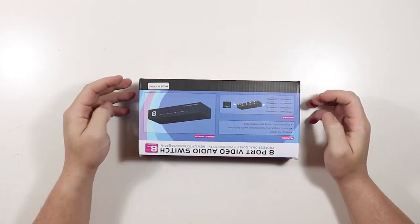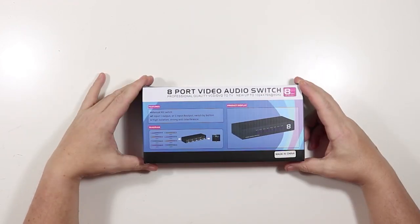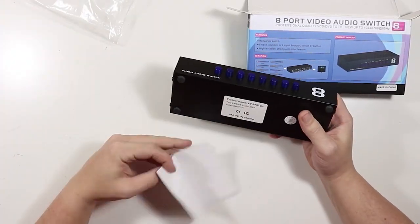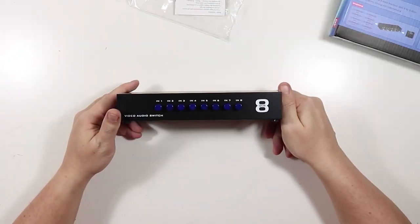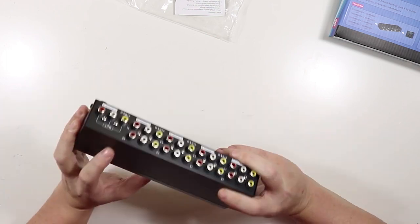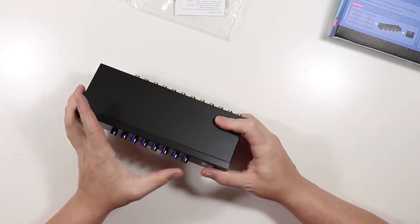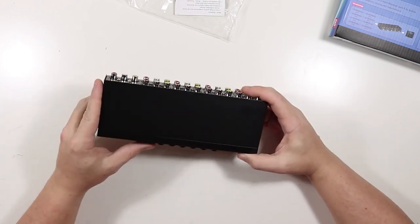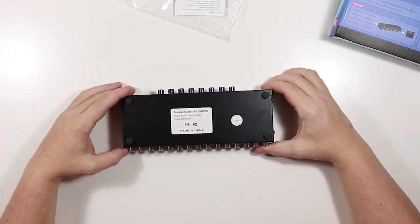After much deliberation on how I would house my input ports, I decided on picking up this 8 port RCA composite switch from Amazon for $22. I could have picked one up at a local Goodwill for around $5, but I wanted something brand new with a metal frame and with enough space for me to add an HDMI port of my own.